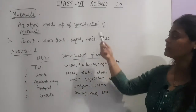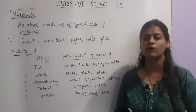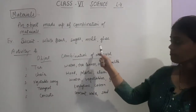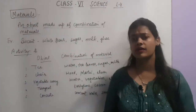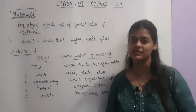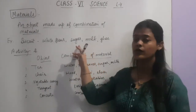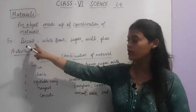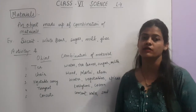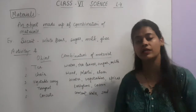The next part is: an object made up of a combination of materials — meaning a single object can be made up of more than one material. Let's see an example. For example, biscuit is an object. It is made up of ingredients that include white flour (maida), sugar, milk, and ghee. So one object is made up of more than one material — a combination of materials — and this object biscuit is not possible to make without the combination of these materials.